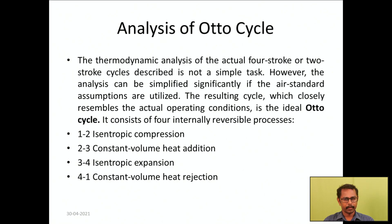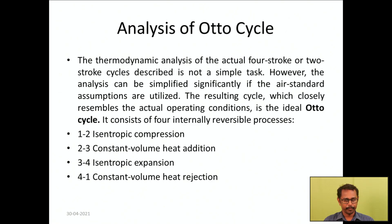Now we will see the analysis of the Otto cycle. Using the air standard assumptions, thermodynamic analysis of the four-stroke or two-stroke cycle can be simplified significantly. The resulting ideal Otto cycle consists of four internally reversible processes: process 1–2 is isentropic compression; process 2–3 is constant volume heat addition; process 3–4 is isentropic expansion; and process 4–1 is constant volume heat rejection.